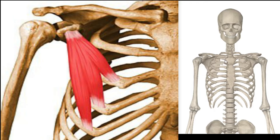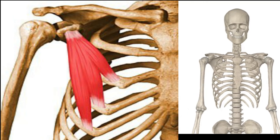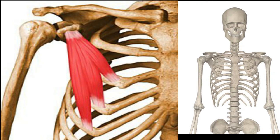The pectoralis minor is under the cover of pectoralis major. It arises from the third, fourth, and fifth ribs. It goes to insert in the coracoid process of your scapula — coracoid with a C. The acromion is the high one; the one below is the coracoid process. Pectoralis minor gets its supply from the lateral and medial pectoral nerves.